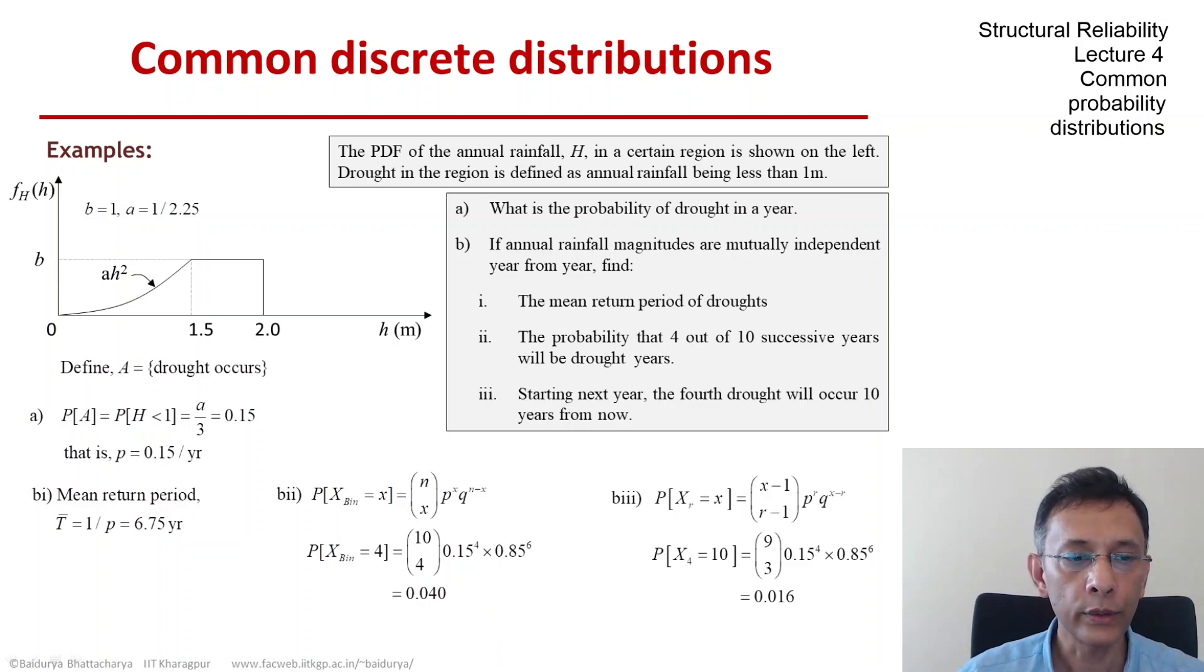The third question is asking for a negative binomial probability because we are interested not in just there will be 4 droughts in 10 years, but the fourth one will occur on year number 10. If you do the math, the answer comes to about 1.6 percent, which obviously as expected should be less than the answer to question number 2.